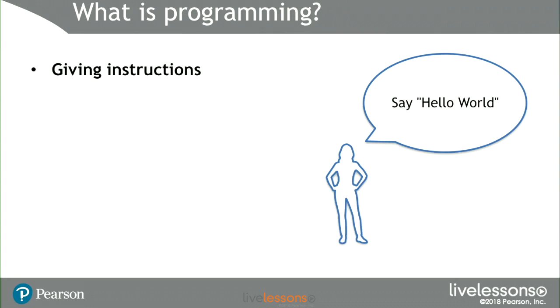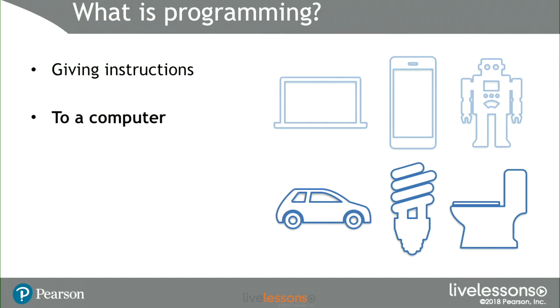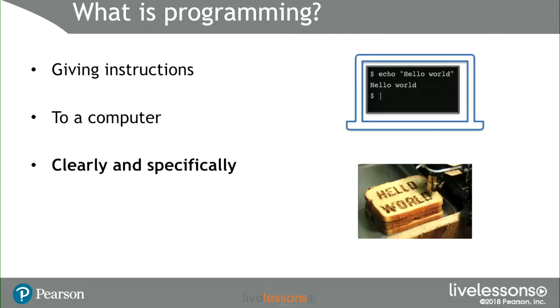So you might tell a computer to say 'hello world.' A computer can be things that you normally think of as programmable, but also things that are becoming programmable as we start doing Internet of Things and advanced technology. Cars nowadays all have computers in them, and there are some fancy light bulbs where you can adjust the colors, and Japanese toilets that speak to you — these are all now programmable, and sometimes they even let you program things in as the user.